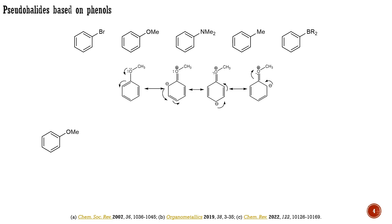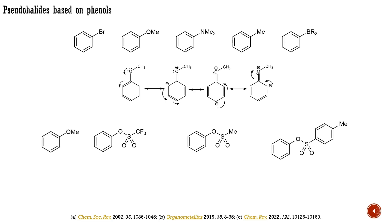Conjugation in phenol derivatives can be minimized by substituting the oxygen with strong electron-withdrawing groups. This modification can render phenol derivatives suitable electrophilic coupling partners for cross-coupling reactions. The most successful electron-withdrawing groups applied to phenols are triflate, mesylate, and tosylate. Aryl triflates have proven to be excellent coupling partners in cross-couplings, exhibiting higher reactivity than aryl mesylates and tosylates, which are still useful coupling partners demonstrating comparable reactivities.